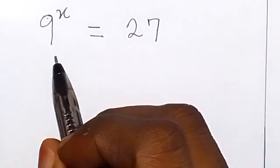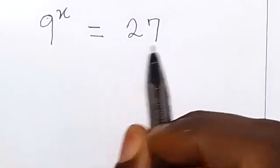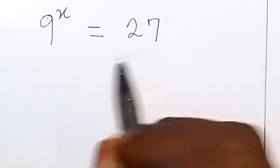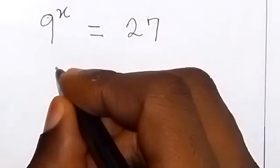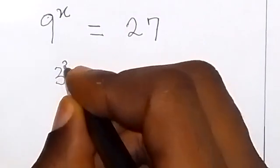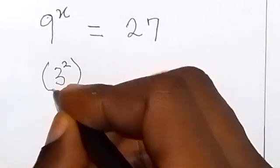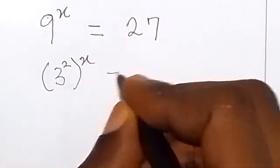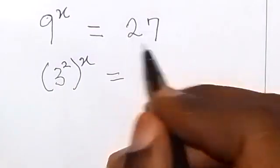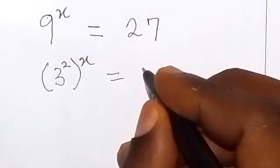So we have 3 raised to power 2 here, then raised to power x equals to 27. Here we can express this as 3 raised to power 3.